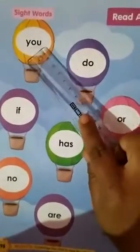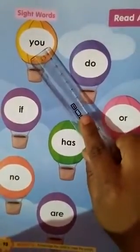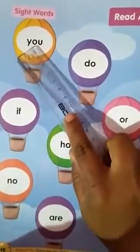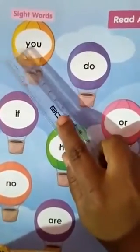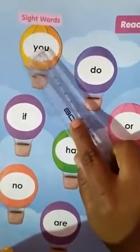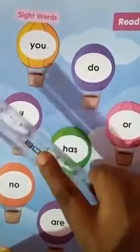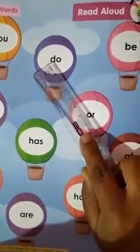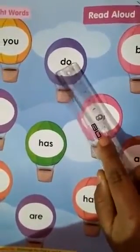Look at the first sight word. This is Y-O-U. You. Next is D-O — Do.